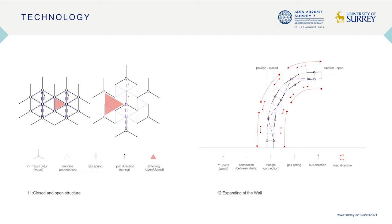We came to the result of using textiles at this point. These have a positive effect on the closing behavior of the construction and prevent superimposition of the triangles and wooden parts. However, in order not to neglect the stability factor, additional parts must be added. For this purpose, we focus on gas-pressure springs, which also force the structure into its open position.